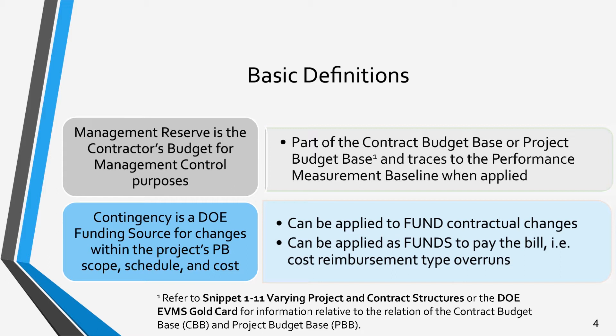Contingency may also be applied to pay the bill for overruns on cost reimbursement-type contracts. DOE is responsible to reimburse the contractor for all allowable costs up to the cost and funding limits established in the contract in accordance with FAR Clause 52.232-18, Limitations of Cost for any fully funded cost reimbursement contracts, and 52.232-22, Limitations of Funds Clause as applicable for incrementally funded cost reimbursement contracts.